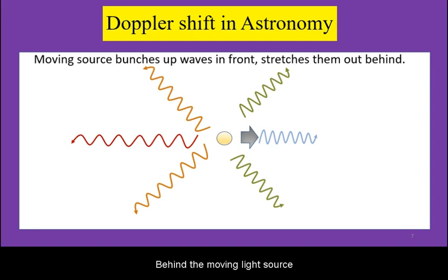Behind the moving light source, the wavelength gets spread out, hence the frequency will be lower, hence the color will be just slightly redder.